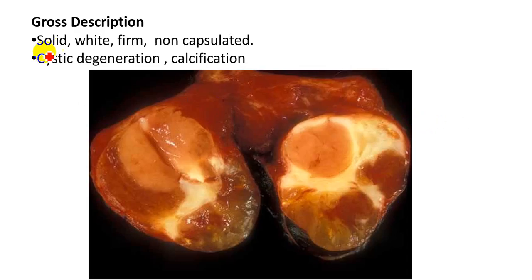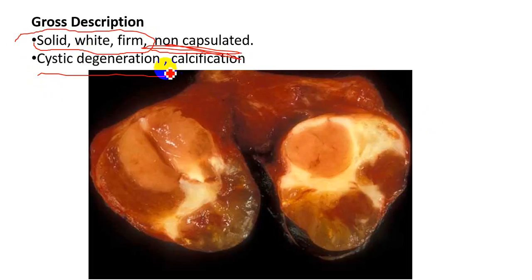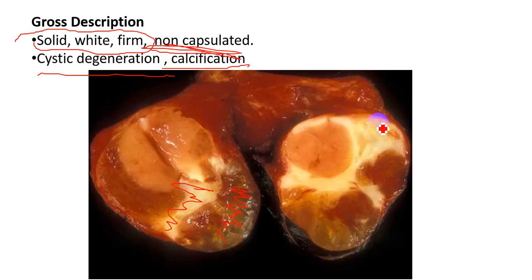This is the gross specimen of papillary carcinoma of the thyroid gland. The tumor is solid, white, and firm, and it is non-capsulated and infiltrative. You can see cystic degeneration and calcification in the tumor. The tumor is multifocal — you can see cystic degeneration here and extensive calcification in this tumor mass.